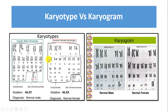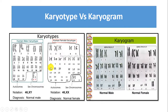Now we have seen the differences. One thing I told you is that karyotype helps to determine the chromosome complement of an organism. You need to tell me what this chromosome complement of an organism is.